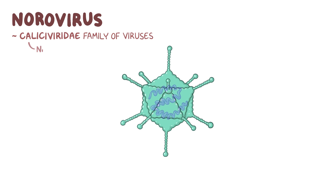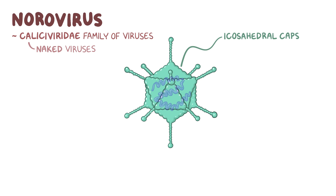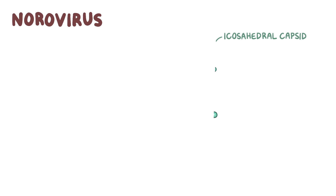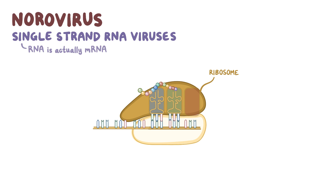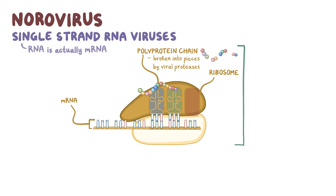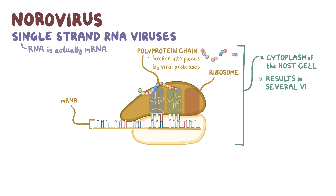Norovirus is part of the Caliciviridae family of viruses. They are naked viruses surrounded by an icosahedral capsid, which is a spherical protein shell made up of 20 equilateral triangular faces, and they're naked because the capsid isn't covered by a lipid membrane. They are also single-strand RNA viruses, which means that their RNA is actually mRNA, and the host cell ribosomes use this mRNA to make one long polyprotein chain, which is then broken into smaller pieces by viral proteases. This all happens in the cytoplasm of the host cell, since that's where ribosomes are found, and it results in several viral proteins.